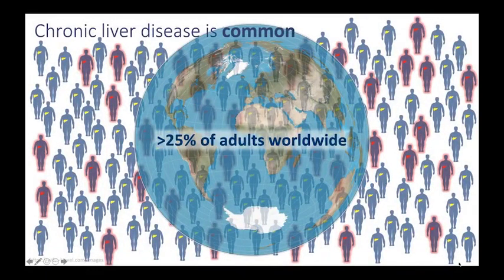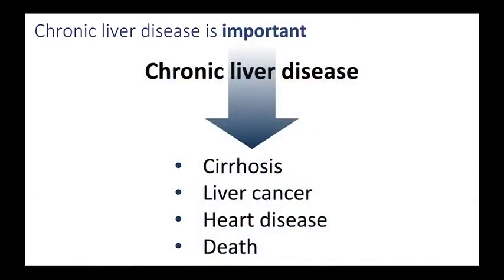First, in the way of background, it's important to understand that chronic liver disease is quite common, now affecting over 25% of adults worldwide, and an increasing number of children as well. Chronic liver disease is not only common, it is also important, as it can predispose to cirrhosis, liver cancer, heart disease, and even death.